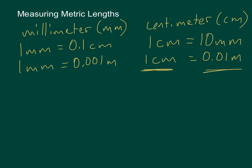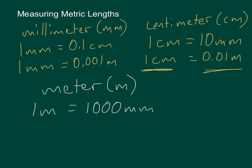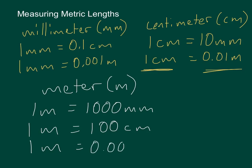Now let's look at meters. A meter is abbreviated M. 1 meter is equal to 1 thousand millimeters, 1 meter is equal to 100 centimeters, and 1 meter is equal to 1 thousandth of a kilometer, because there are 1 thousand meters in a kilometer. So if you were in cross country running a 5K, the 5K stands for 5 kilometers, and you would be running 5,000 meters — so they could call it a 5,000 M, but they call it a 5K.